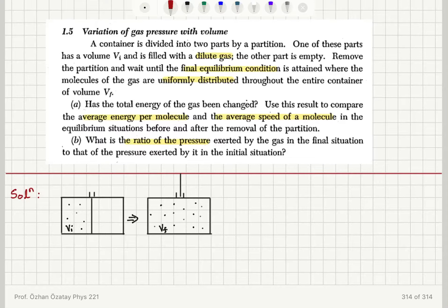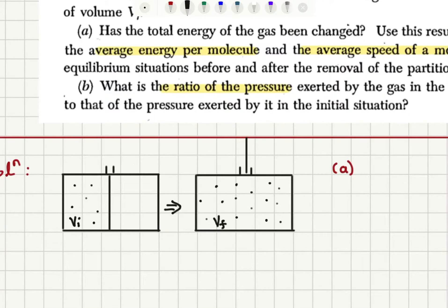As I read this problem statement, I see that it's a dilute gas. So I can assume that this is an ideal gas and therefore elementary kinetic theory can be applied. For Part A of the problem, I want to see if the total energy has been changed. The gas fills the entire volume V_final and at equilibrium it reaches the uniform state.